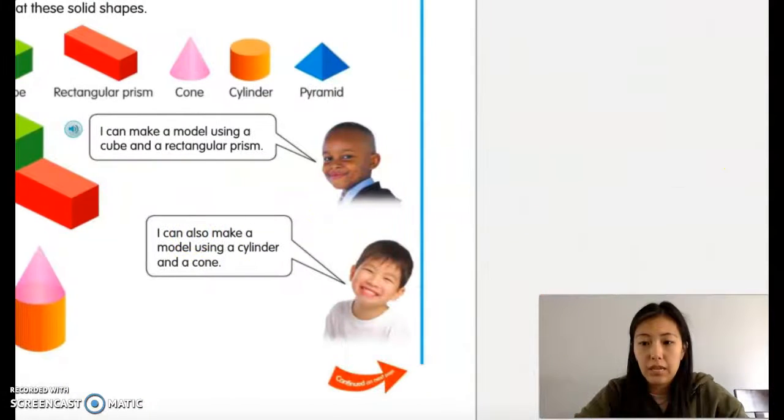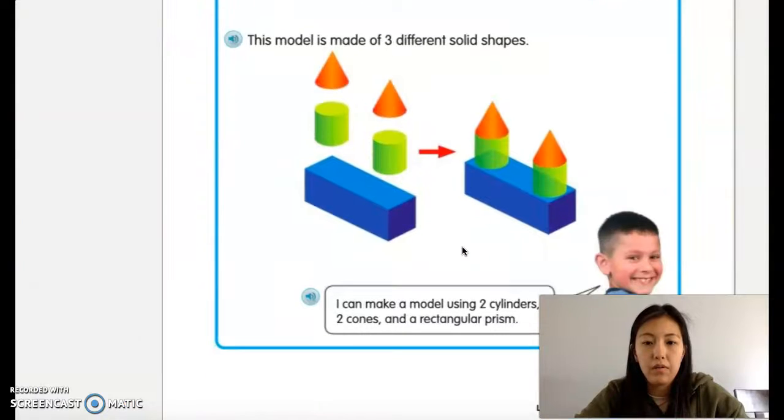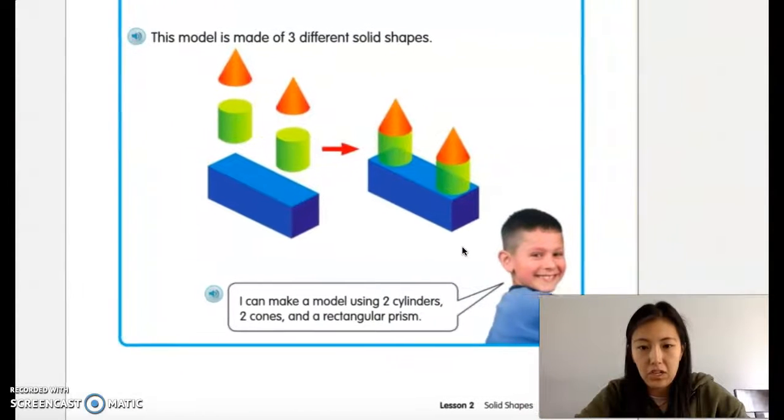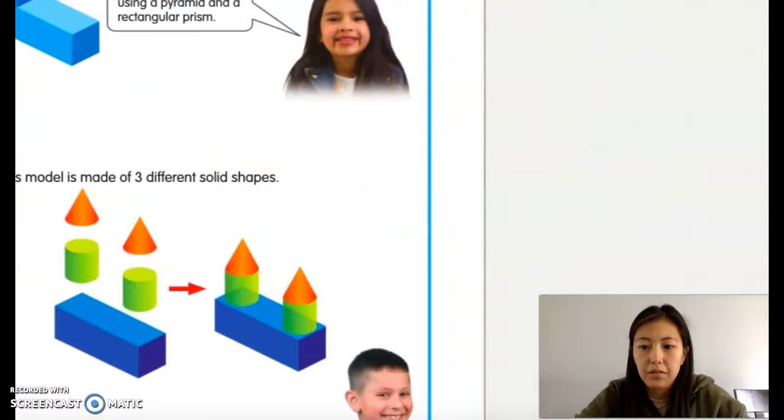So boys and girls, today you will be working on identifying solid shapes through a model. If you notice here I have a model and this has three different solid shapes. We have two cylinders, two cones, and one rectangular prism. Let's do another model together.